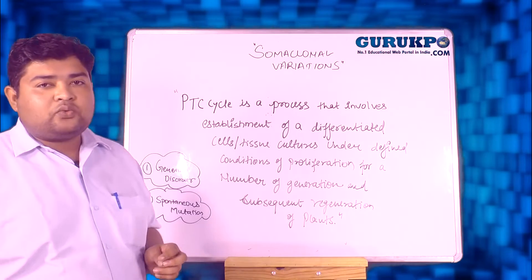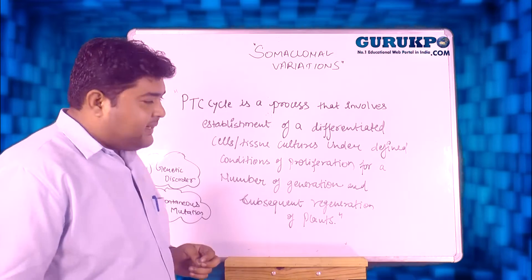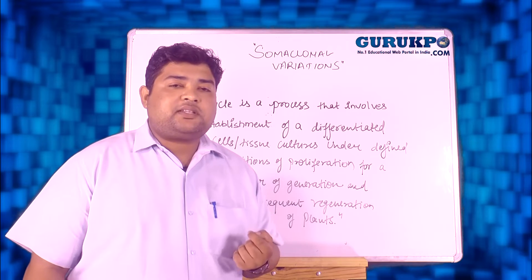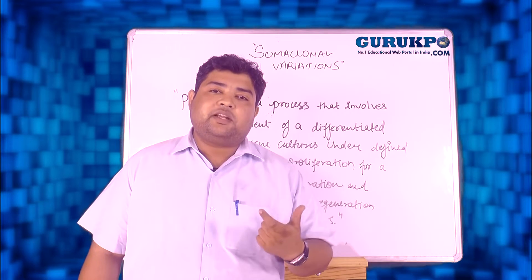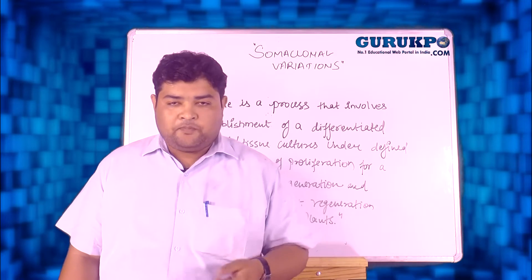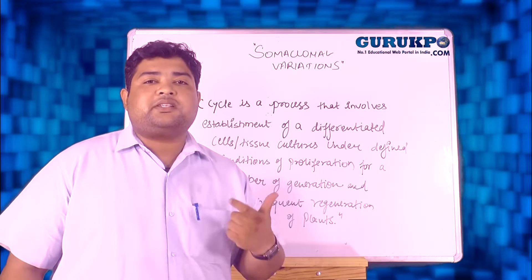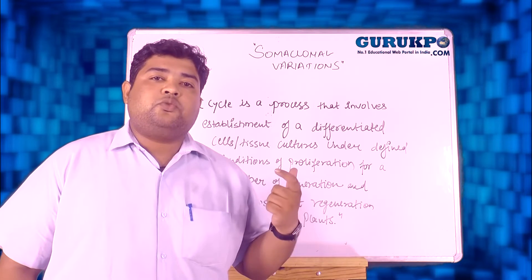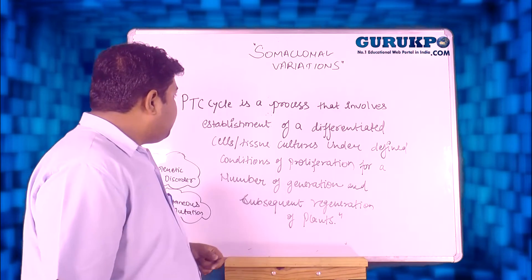We will now discuss how somaclonal variations are achieved inside growing plants. Basically, somaclonal variations are developed inside any plant by two means: first, by utilizing the in vitro cell culture technique, and second, by using the normal field breeding technique. In both techniques, a slight part of in vitro culture technique is involved, and therefore variations arrive through the plant tissue culture cycles inside the explant — that is, any part of the crop used to improve the quality of the plant through plant tissue culture.